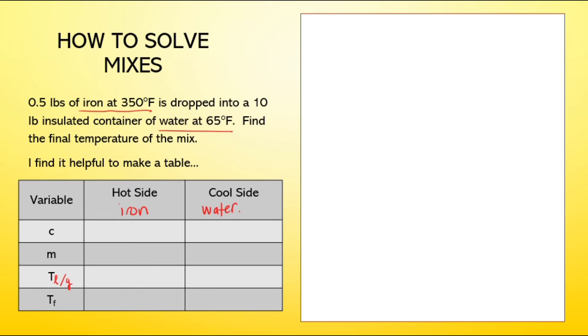We've got to get our specific heat values for both iron and water. I happen to know that water is 1.00 and iron is 0.115, making sure I'm getting them from the right location on the table. Next, I move on to the masses. I have 0.5 pounds of iron, and I have 10 pounds of water. And what temperature did the iron start at? 350. What temperature did the water start at? 65.